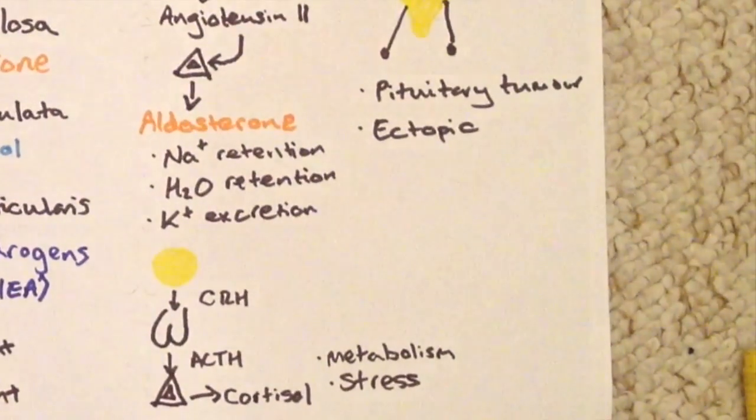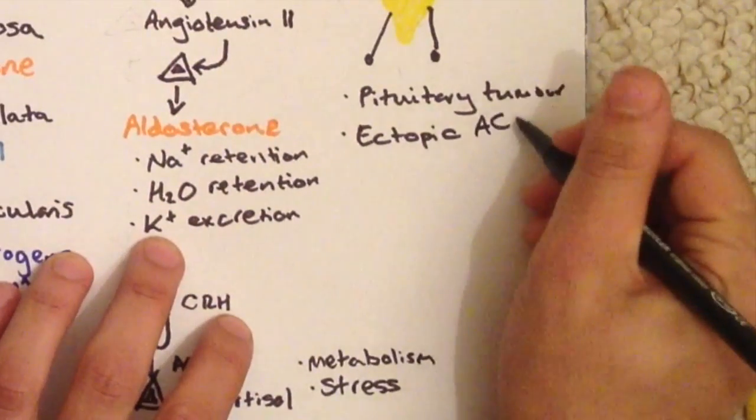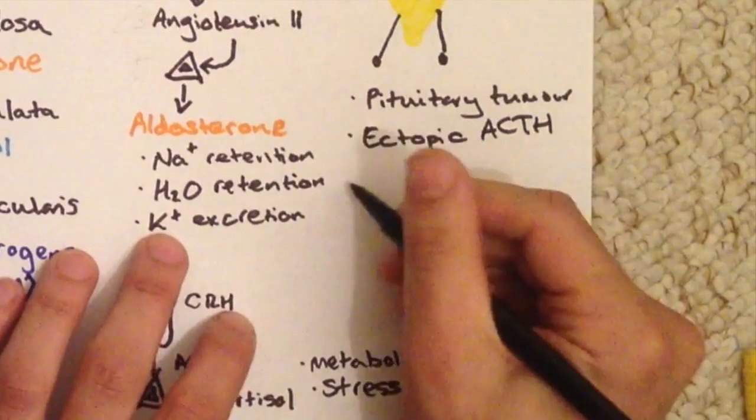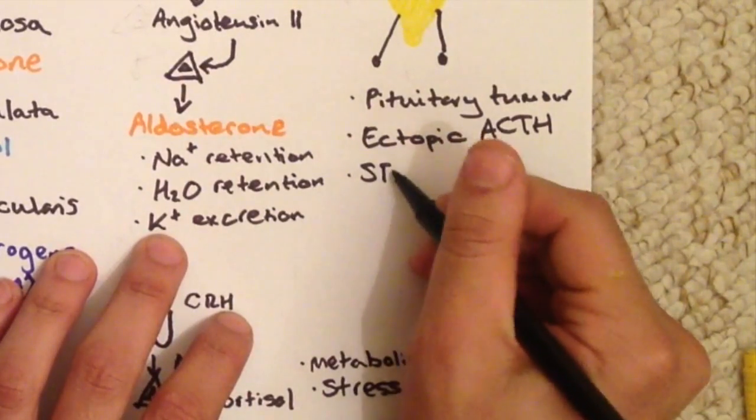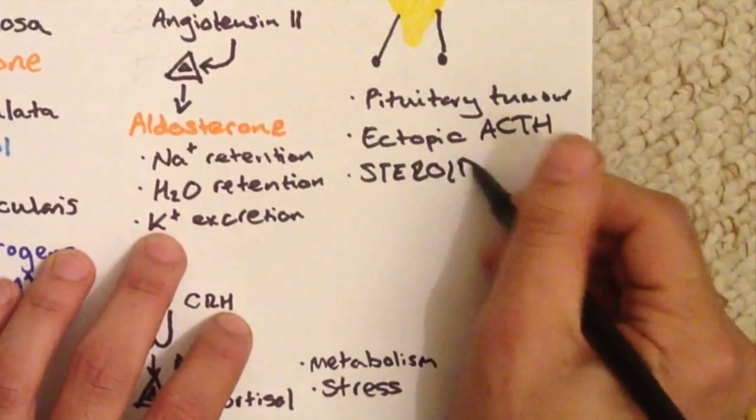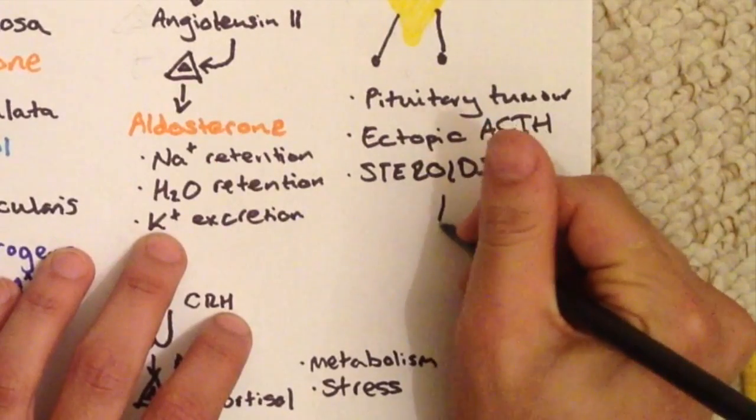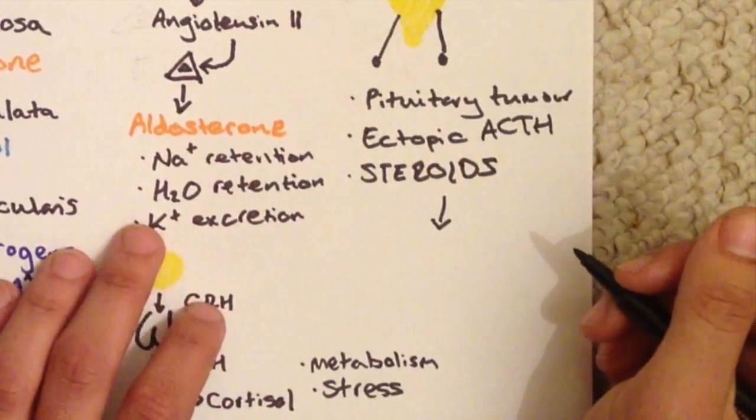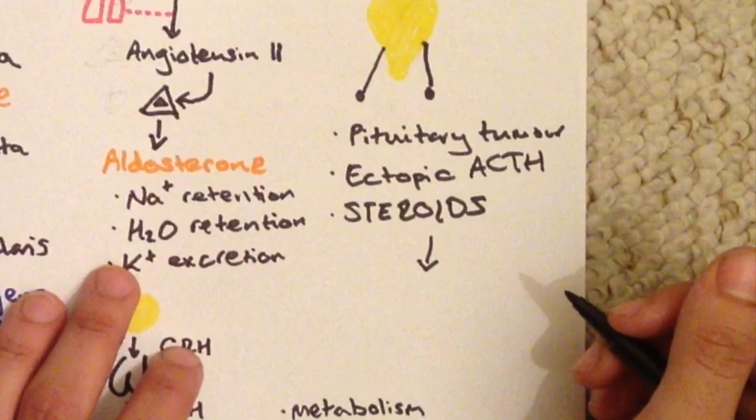A more rare cause is ectopic ACTH production. So you could have a tumor with paraneoplastic features, and that could then cause a secretion of ACTH and thus an increase in cortisol in the blood. The last cause, which is probably the most important one to remember, is steroid use.